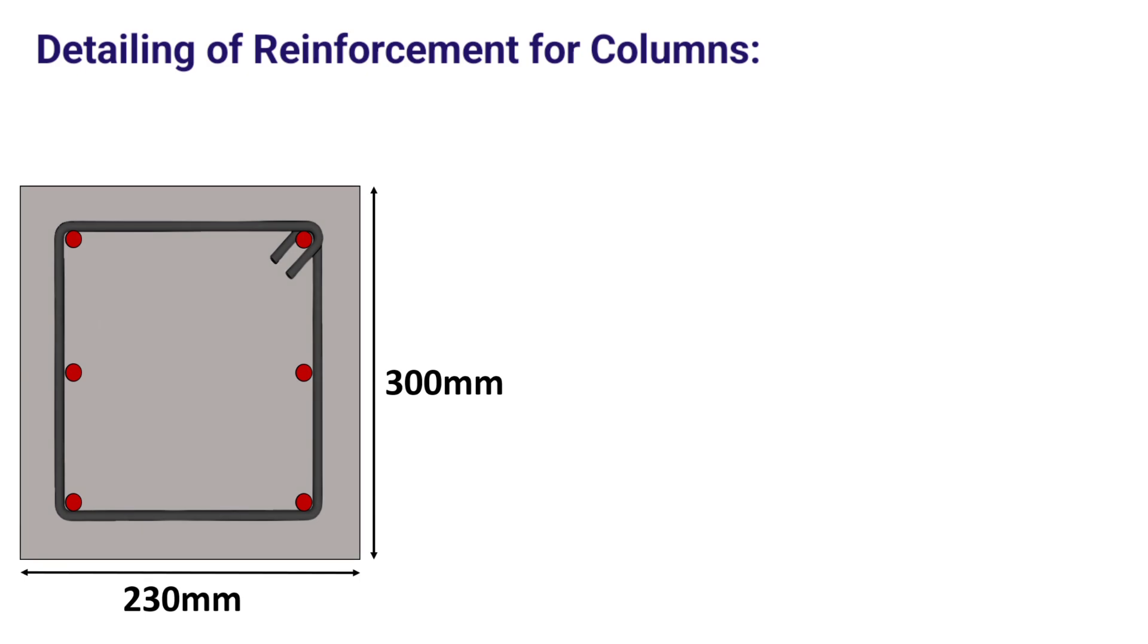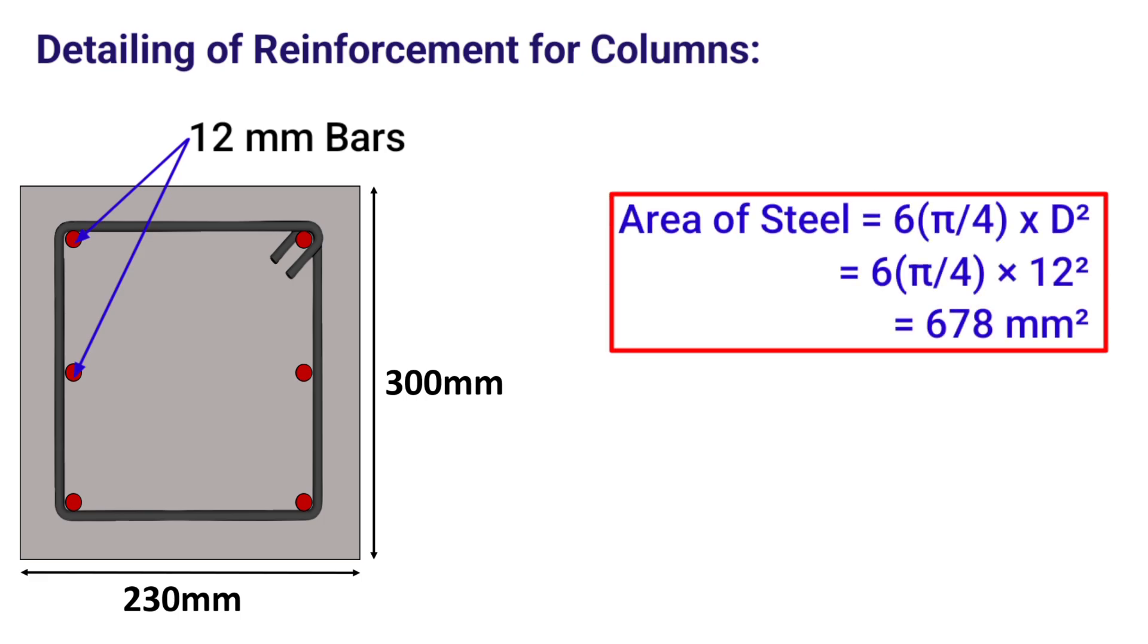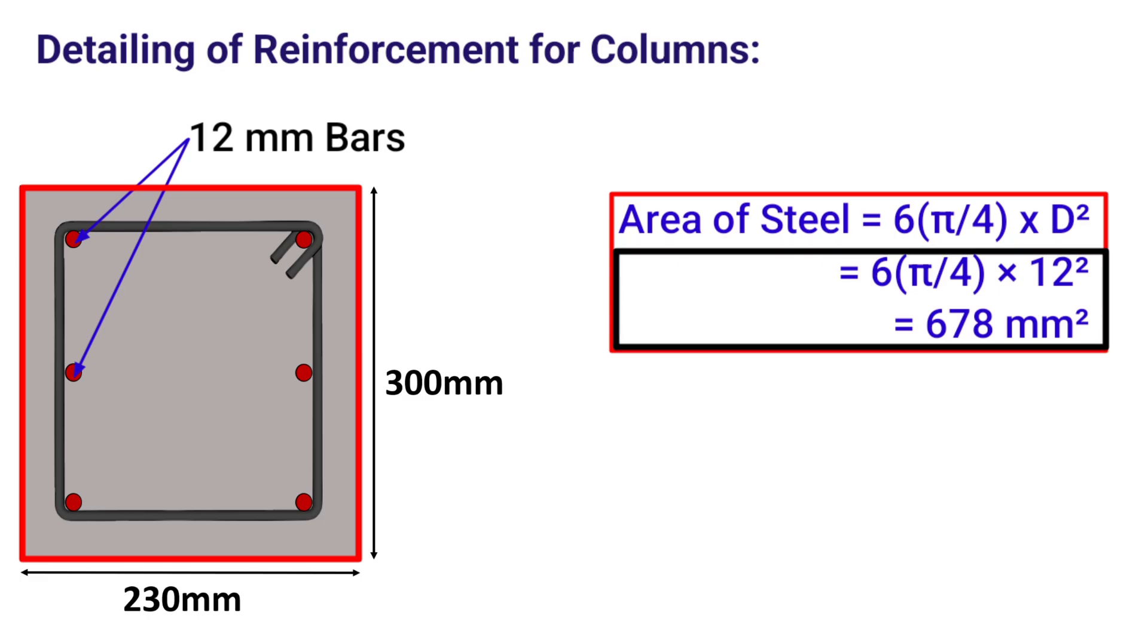For illustration, if we have a column of size 230 x 300 mm provided with 6 number of 12 mm steel bars. The area of steel for this column will be equal to 6 times the area of cross section of each bar, or simply 6 times π/4 × d², where d is the diameter of the longitudinal bar. The gross cross sectional area is the total area of this section. Hence, the area of steel will be equal to 6 × π/4 × 12², where 12 is the diameter of the longitudinal bar.